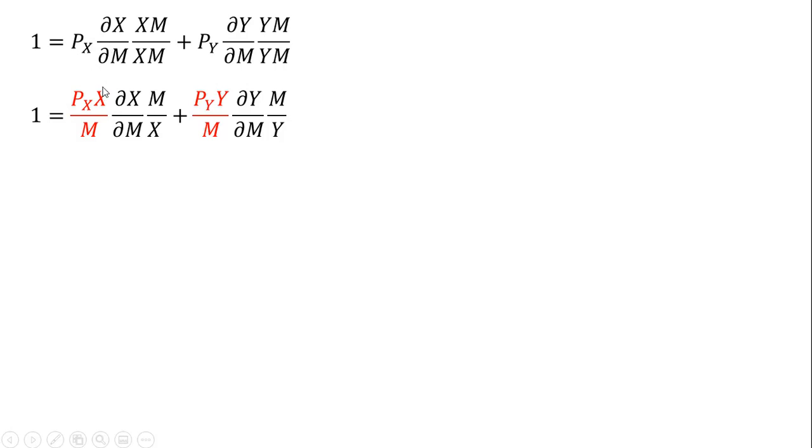I'm going to take one of these X's up here and just move it over here, price of good X times X. I'm going to take one of these M's and just move it under that. We get this result. I'm doing a similar thing over here, just moving these Y and M terms around a little bit.